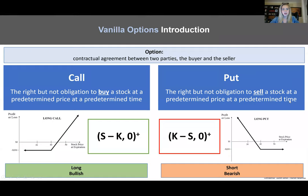For vanilla options, let's step back a step. What is an option? An option is a contractual agreement between two parties, the buyer and the seller. A call is the right but not obligation to buy a stock at a predetermined price at a predetermined time, where a put is the opposite — the right but not obligation to sell a stock at a predetermined price at a predetermined time. This is reflected clearly in the payoff structures you can see on the bottom left and right, respectively.